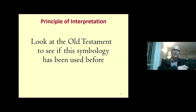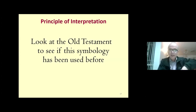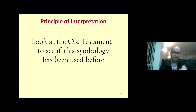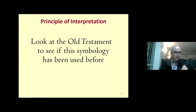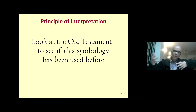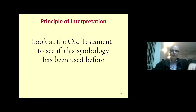Constantine not only allowed Christianity to be practiced, he elevated Christians into positions of power and facilitated meetings to discuss differences of doctrine, trying to unite the beliefs of Christians — for the sake of peace and unity in the empire, not because he loved truth. Unfortunately, this would lead to a corrupted form of Christianity and the birth of a Christian champion.